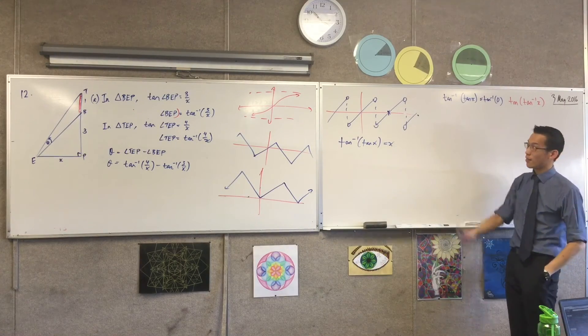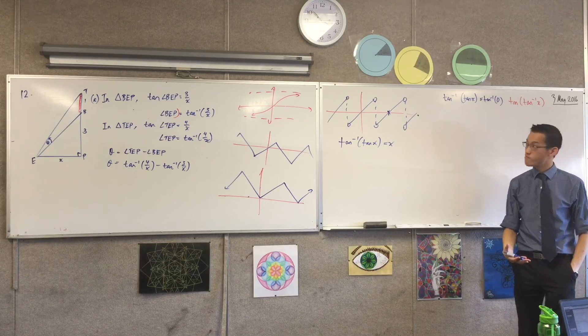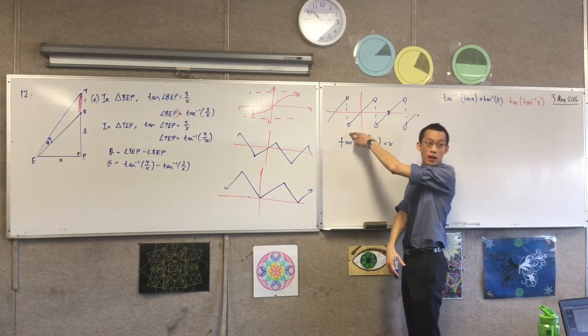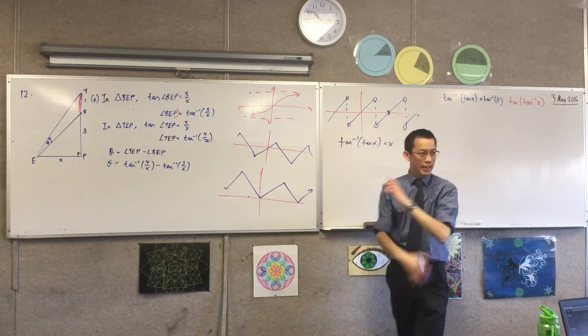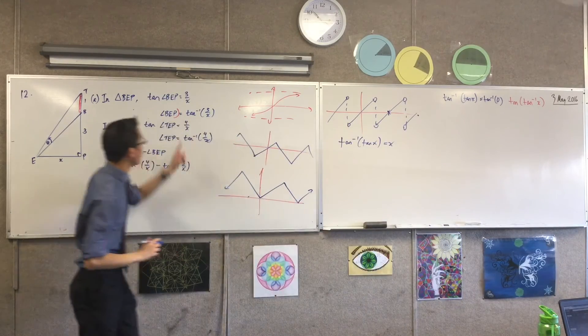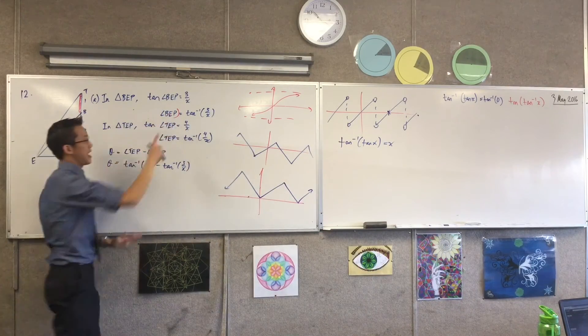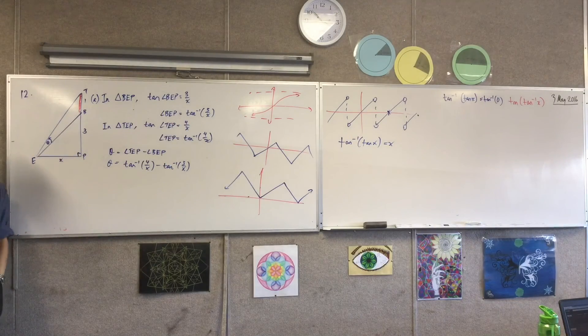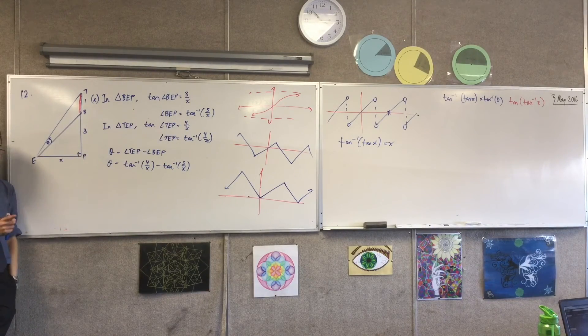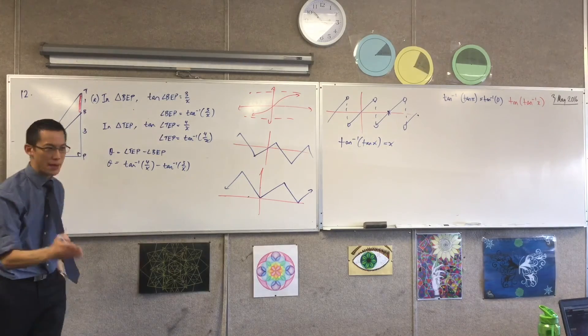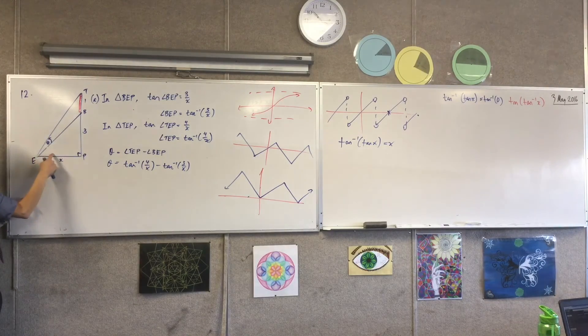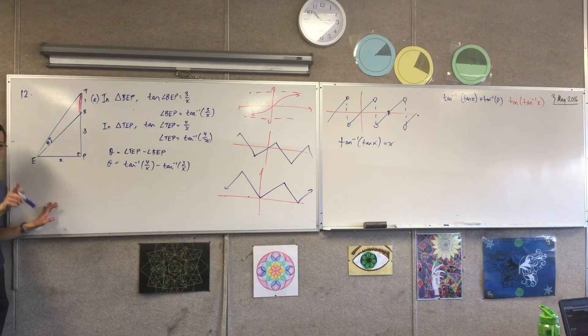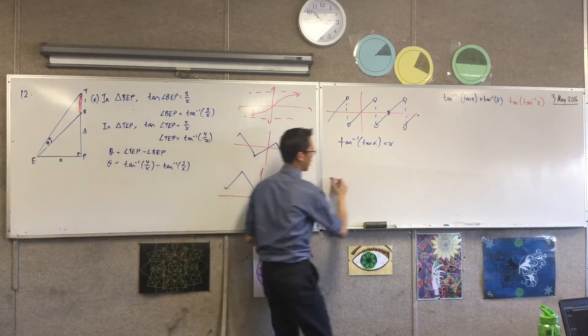I was contending tan inverse of tan x equals x. That's what I did. I just didn't make it explicit. But this is only true in one small part of the domain, namely from negative pi over 2 to pi over 2, not inclusive. Here I'm okay, I'm out of the woods, because angle BEP is not just any angle. It's an angle in what kind of triangle? It's in a right angle triangle.